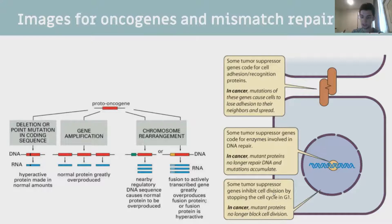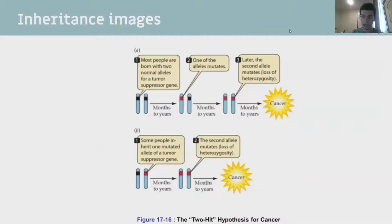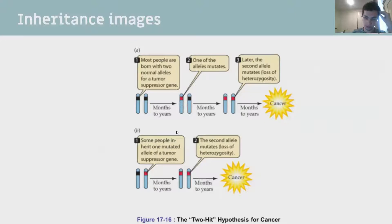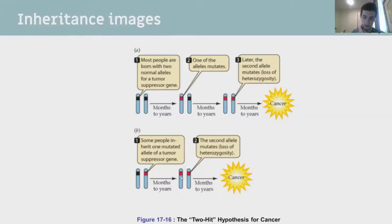This helps understand germline transmission and why that makes people more susceptible. Usually people have two alleles for a tumor suppressor gene. If one allele mutates, they might have slightly reduced function but generally be okay. If both alleles mutate, you'll have a loss of heterozygosity and it can cause cancer - this process can take months to years. Whereas if you've inherited, for example, a retinoblastoma mutation, you have much less time for the second allele to be mutated, making you much more susceptible.